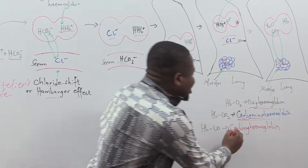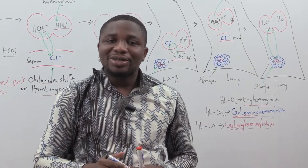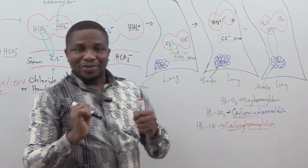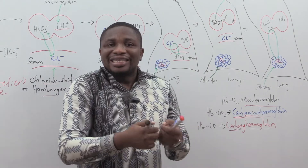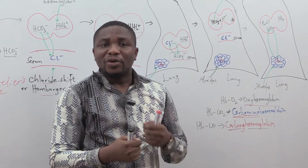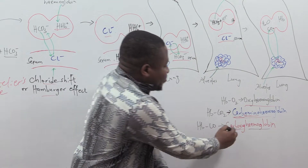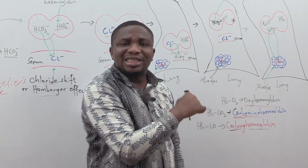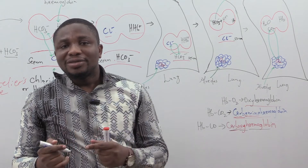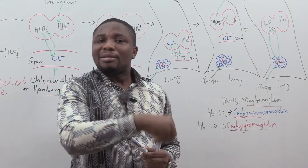When carbon monoxide binds to hemoglobin, we call it carboxyhemoglobin. Carbon monoxide has the greatest affinity for hemoglobin and shares the same binding site as oxygen. So when carbon monoxide comes in, it displaces oxygen and takes its binding site. We call it carboxyhemoglobin because carbon monoxide displaces oxygen from its binding site on hemoglobin and takes its place.